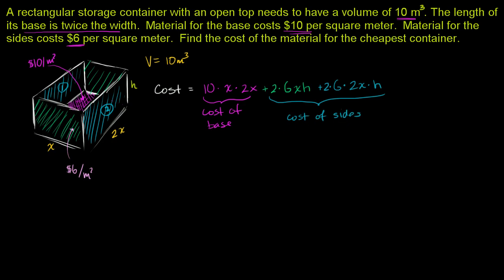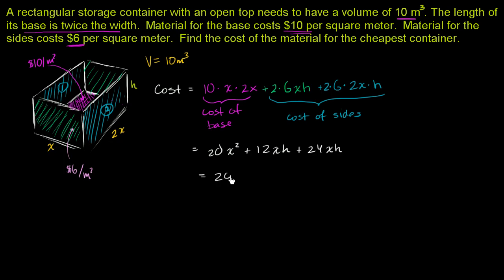Let's simplify. 10 times 2x² gives 20x². Then 2 times 6 times xh is 12xh, and 2 times 6 times 2xh is 24xh. So the total cost simplifies to 20x² plus 36xh.